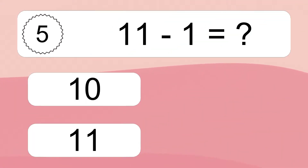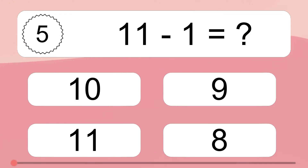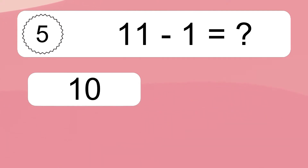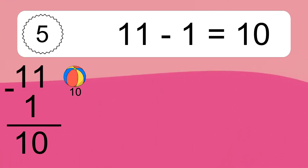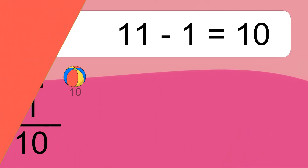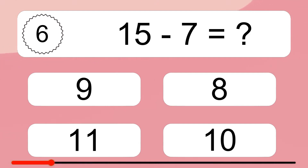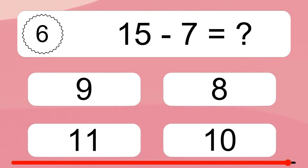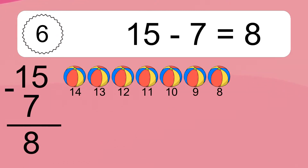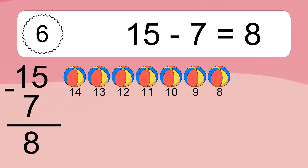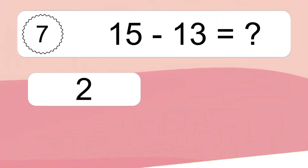11 minus 1 equals what? 11 minus 1 equals 10. Let's count it: 10. 15 minus 7 equals what? 15 minus 7 equals 8. Let's count it: 14, 13, 12, 11, 10, 9, 8.